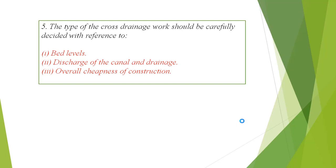The type of cross-drainage work should be carefully decided with reference to which type is appropriate — it may be a siphon, an aqueduct, or a super passage. Selection depends on the bed level, the discharge of the canal and drainage, and the overall cheapness of construction, including the availability of funds, which is a most important factor.